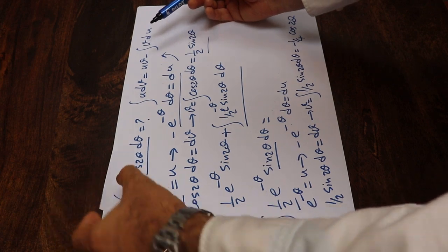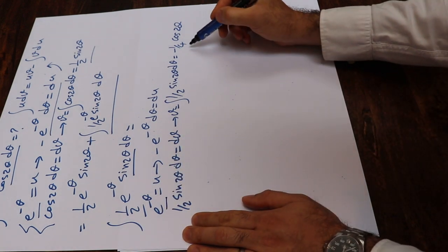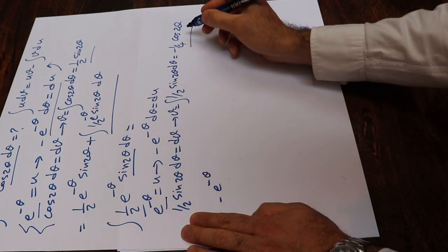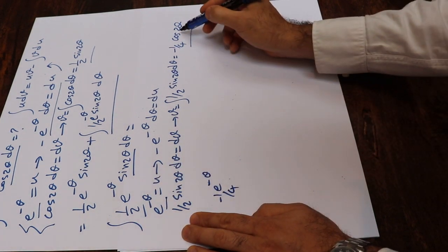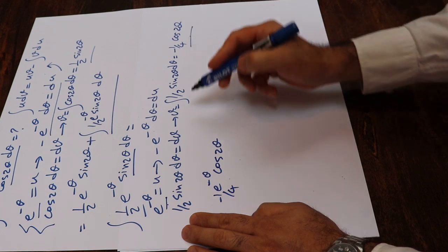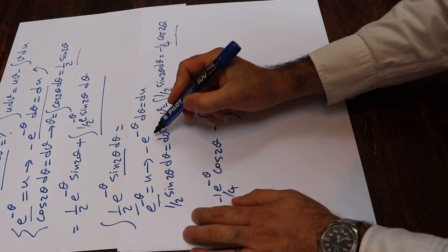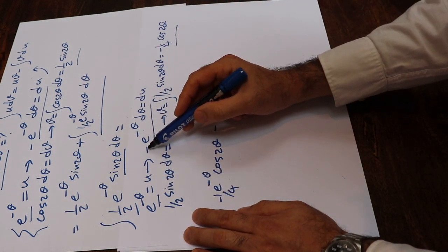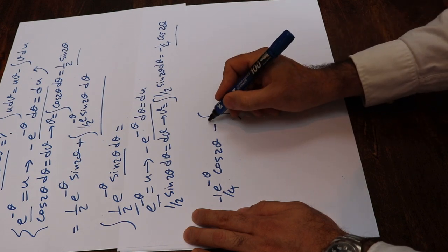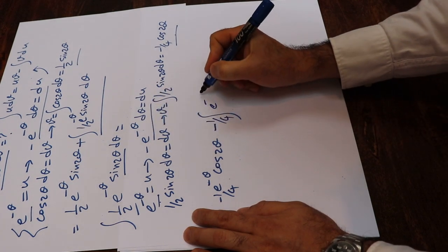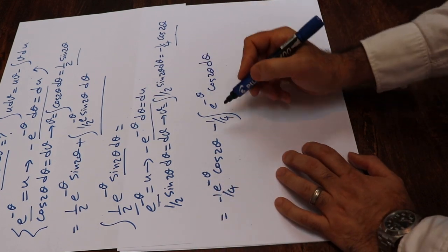Applying uv minus integral of v du: u times v gives minus 1 divided by 4 times e to the power of minus theta times cosine 2 theta. That is u times v, minus the integral of v du. Since minus times minus is plus, and then times this minus is minus, the result is minus 1 divided by 4 times e to the power of minus theta times cosine 2 theta, minus 1 divided by 4 times the integral of e to the power of minus theta times cosine 2 theta d theta.